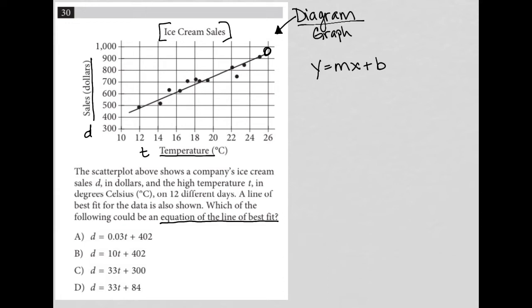Now for us, the y is actually a D value. And then the x is actually a T value. But everything else is pretty much the same. The b is the y-intercept. M is the slope.